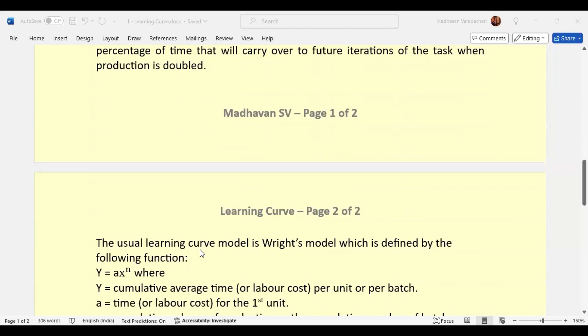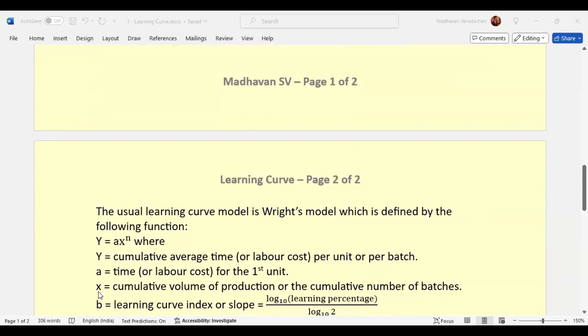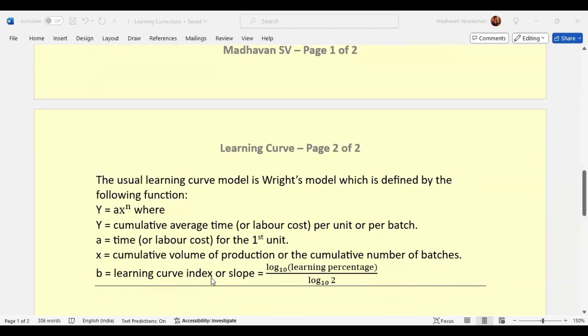The usual learning curve model is Wright's model, which is defined by the function y equals a times x to the power of p, where y is cumulative average time or cumulative labor cost per unit or per batch. A is the time for the first unit or labor cost for the first unit. x is the cumulative volume of production or the cumulative number of batches. p is the learning curve index or slope, which is calculated as logarithm of learning percentage to base 10 divided by logarithm of 2 to base 10.